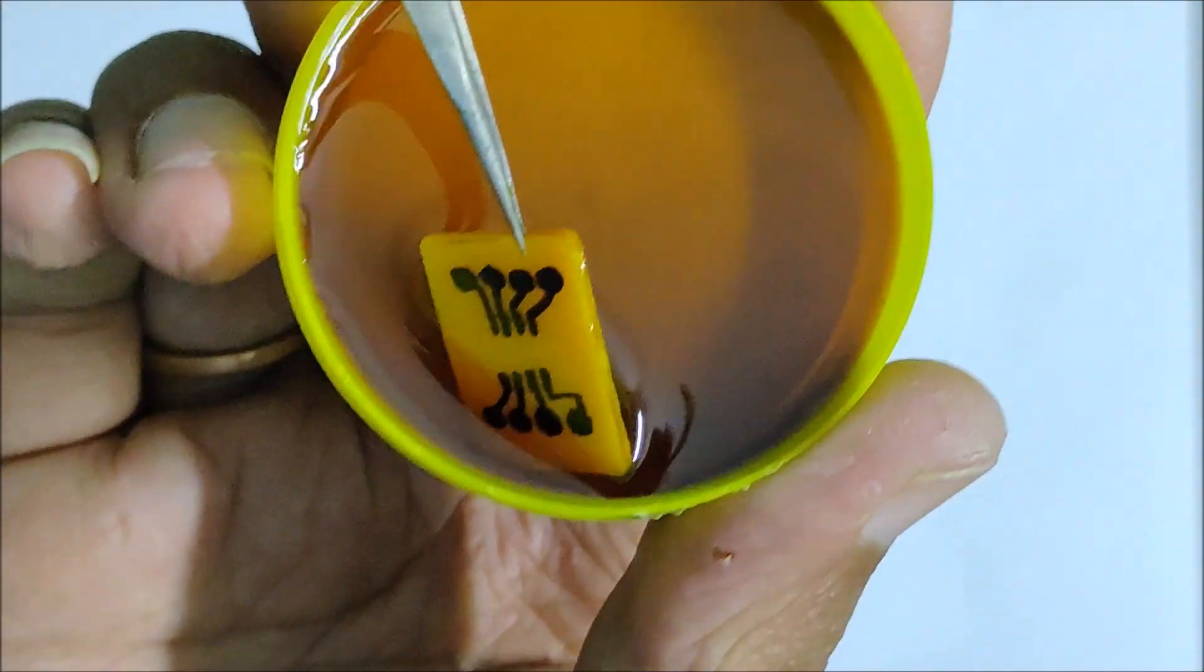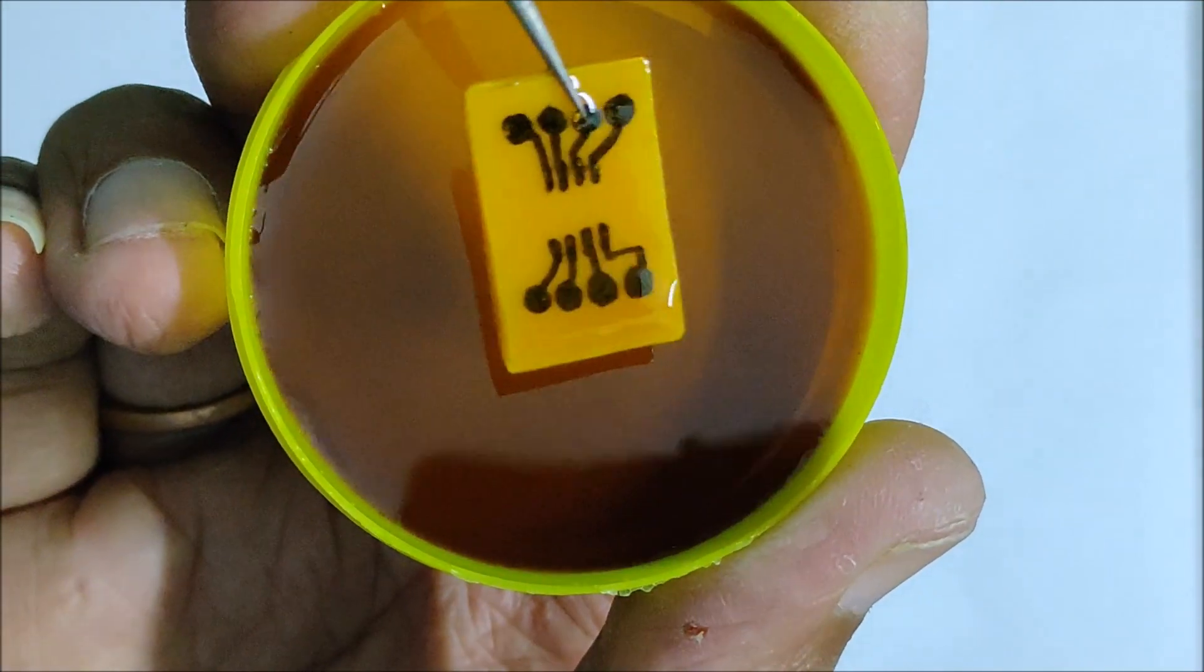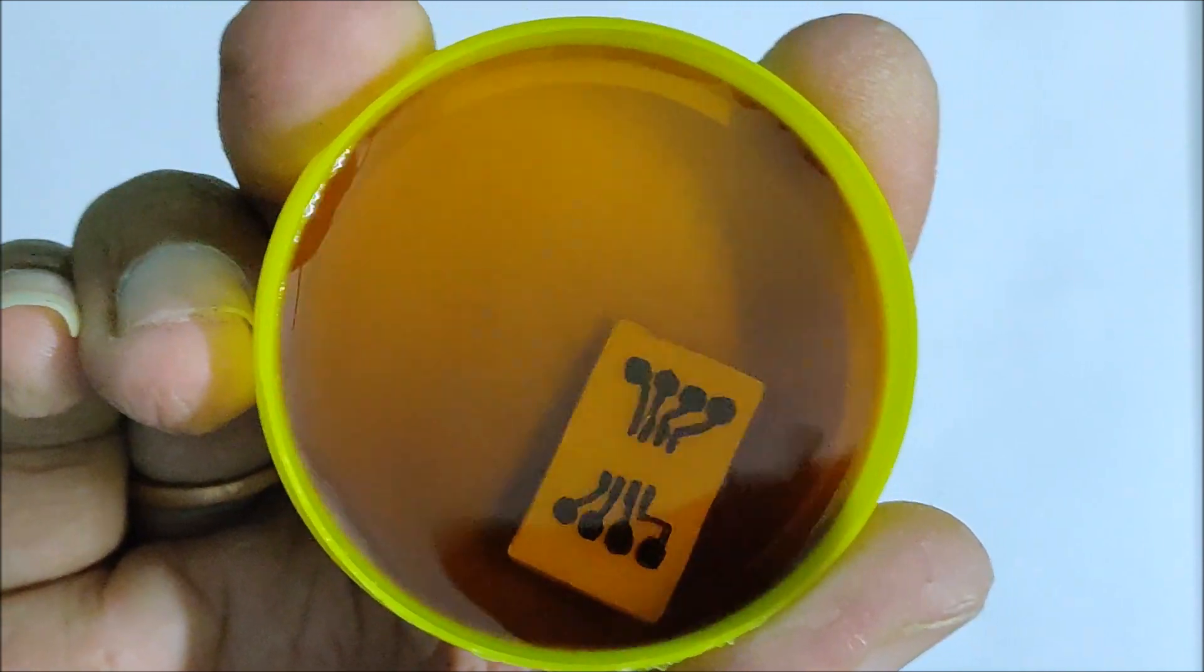And as you can see, the excess copper has been etched away by the solution, leaving only the copper traces that we have drawn using the permanent marker.